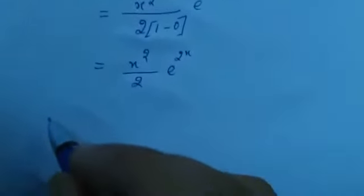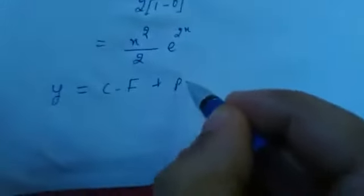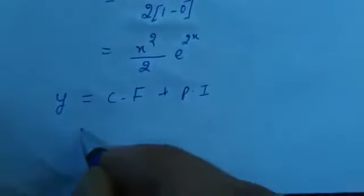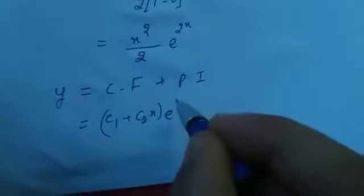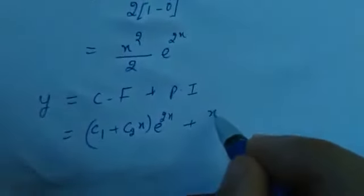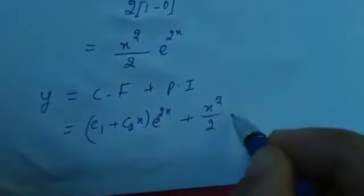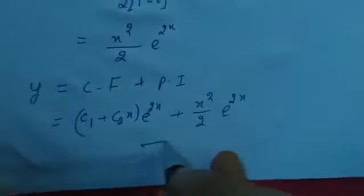Therefore, the solution is y equals complementary function plus particular integral, that is y equals (c1 plus c2 x) into e raised to 2x plus x squared by 2 into e raised to 2x. That is the solution.